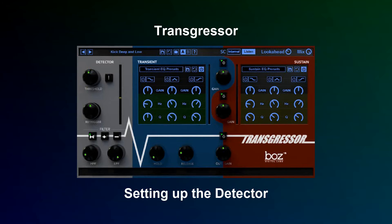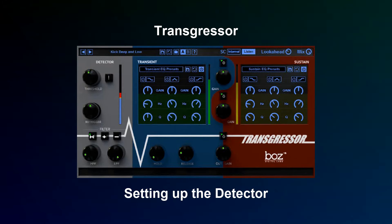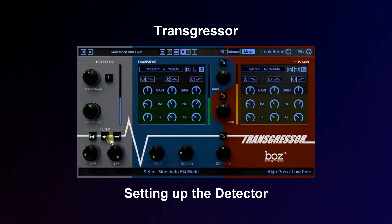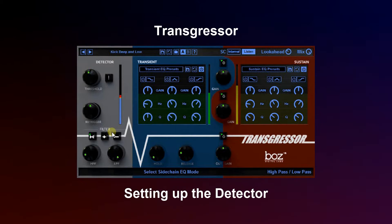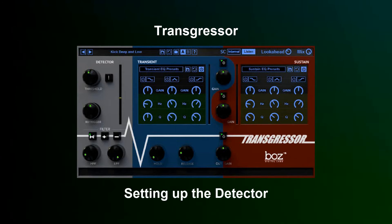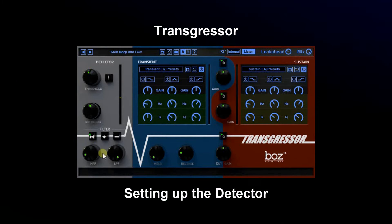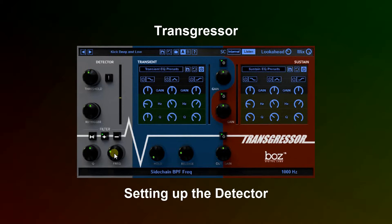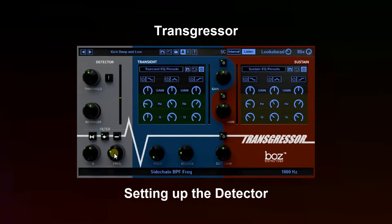...the transient detector is listening for. In this case it's a kick drum. There are two different filter types: there is a high pass and low pass filter, and there is a band pass filter. Each of these can be used to narrow in on a certain frequency range to help cut out bleed and other artifacts.